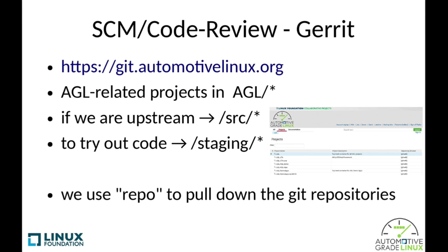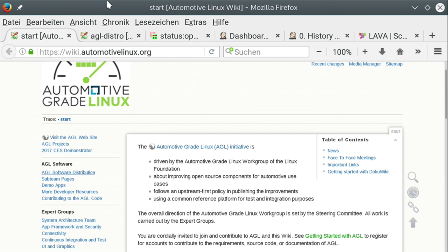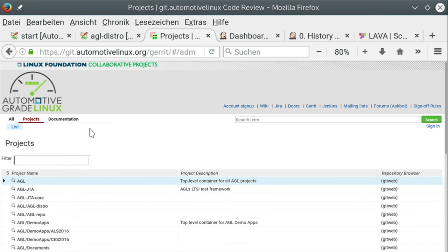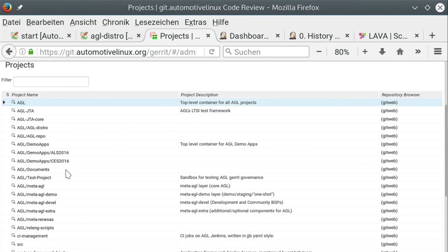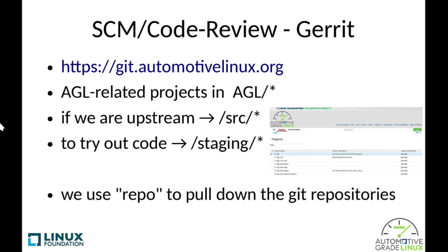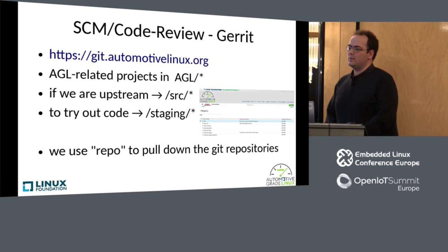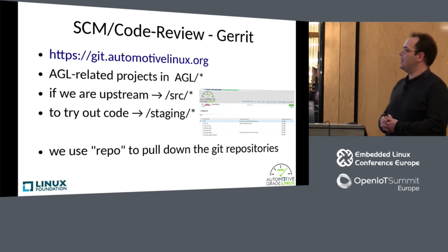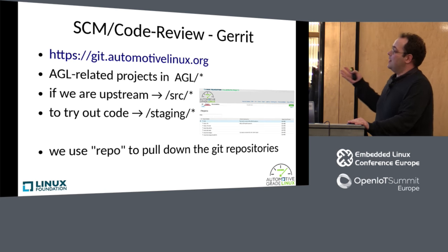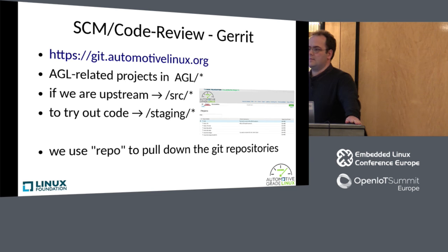You can take a look at git.automotivelinux.org — we have our main projects all within the AGL namespace. We have a few repos where we are the upstream in 'src', and some scratch space for trying stuff out in 'staging'. For the main part, we use repo to pull down the repositories.